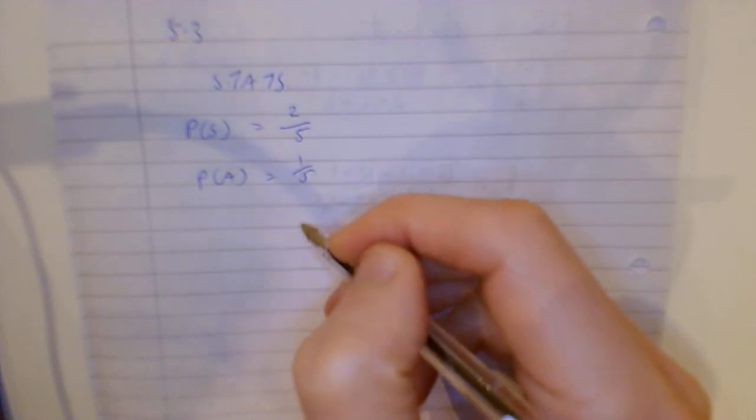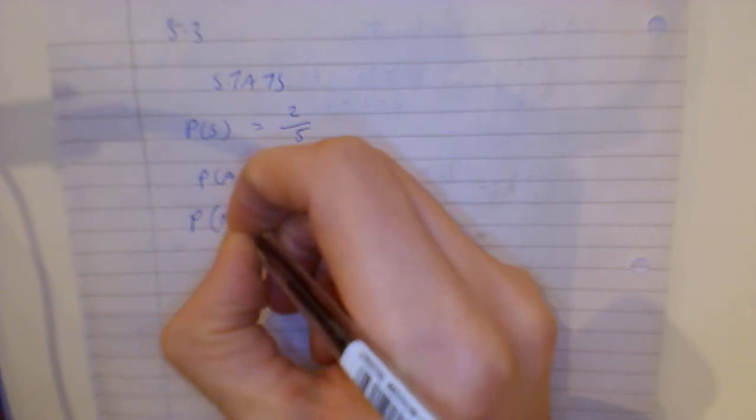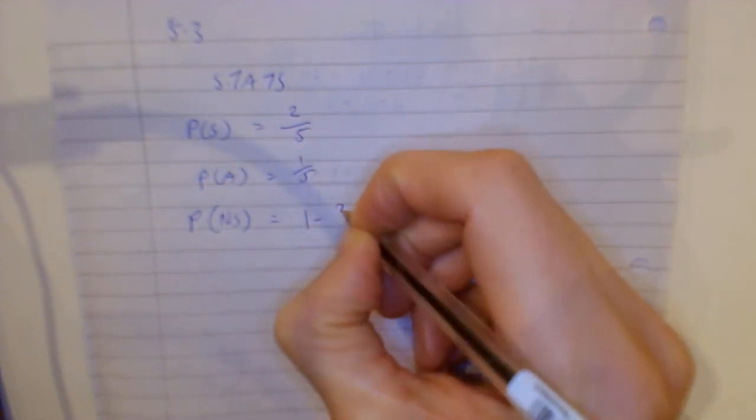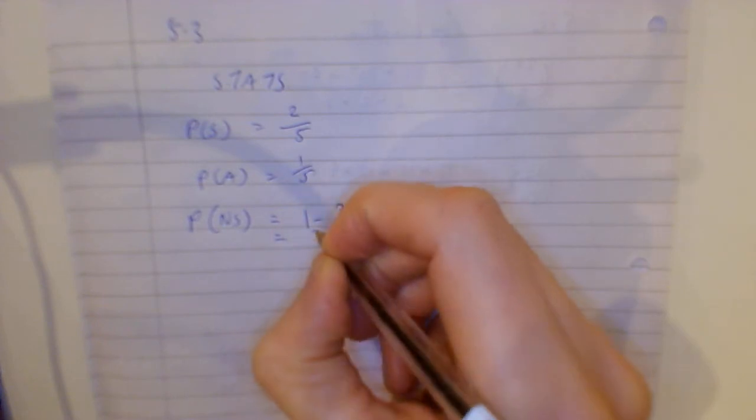What's the probability of not getting an S or what's the probability of getting an S or an A? 3 out of 5, or add these up. What's the probability of not getting an S? 3 out of 5, or I could say P(no S) is 1 minus 2/5, that's 3/5.